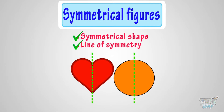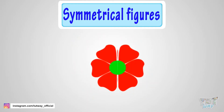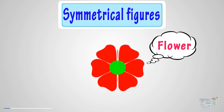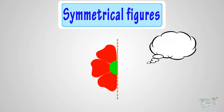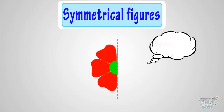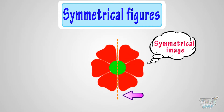Now let's try this with another figure. Here we have an image. Let's try to fold it and see if it is a symmetrical figure or not. Here we are folding it. If we fold this image here, it completely covers the other half. So it's a symmetrical image, and this line of fold is its line of symmetry.